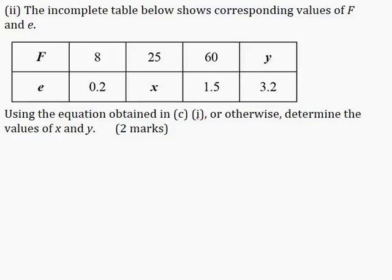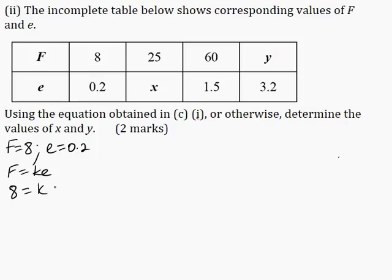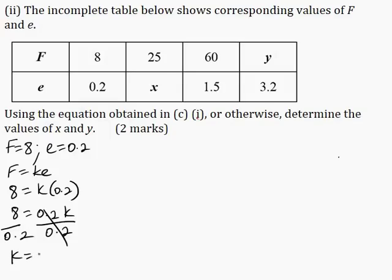Part 2: the incomplete table shows corresponding values of F and E. Using the equation from C part 1, determine the values of X and Y for two marks. First, calculate the constant K using the known values: when F is equal to 8, E is equal to 0.2. Substituting into F equals KE: 8 is equal to 0.2K. Dividing both sides by 0.2, K is equal to 40.